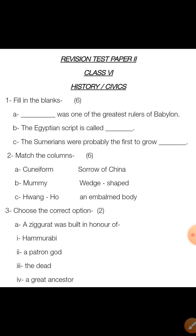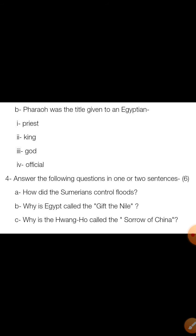I hope you all have prepared these well. Next question is match the columns, where you have to match two columns. The third question is choose the correct option. The sentence is: a ziggurat was built in honor of — and there are four options to choose from. The second MCQ is: Pharaoh was the title given to an Egyptian — with options provided.